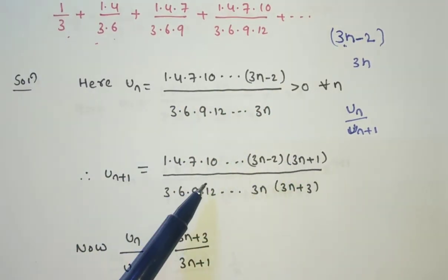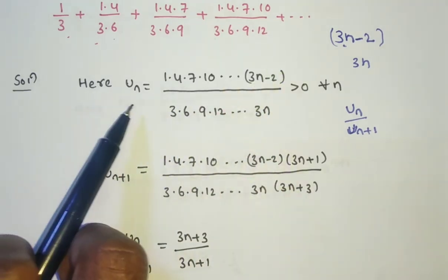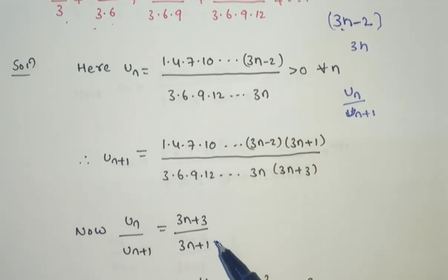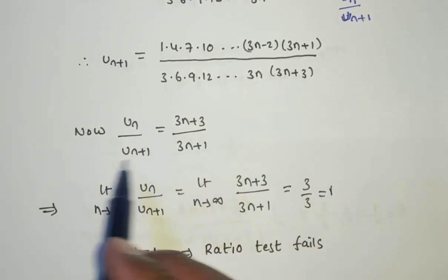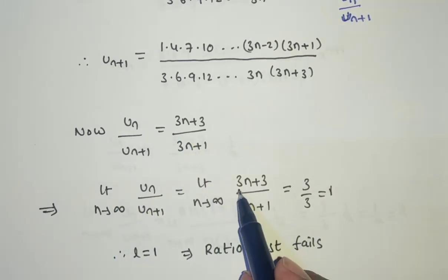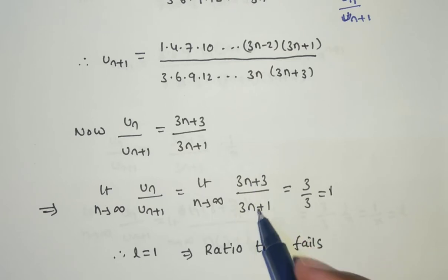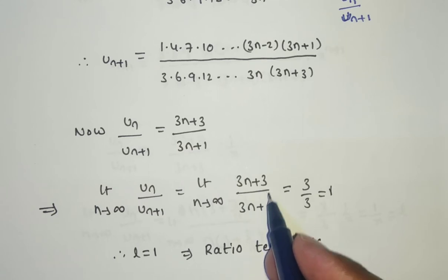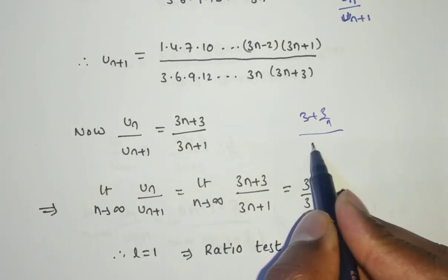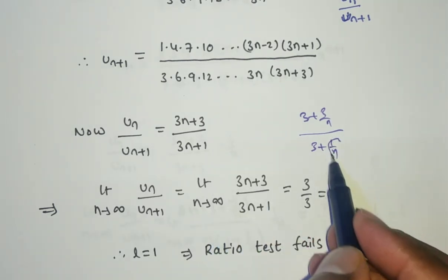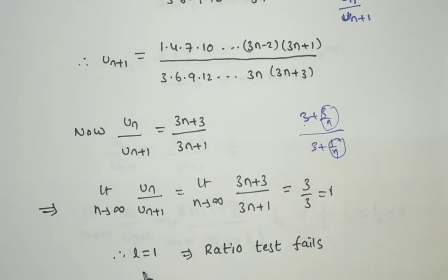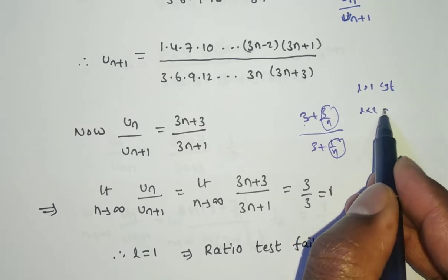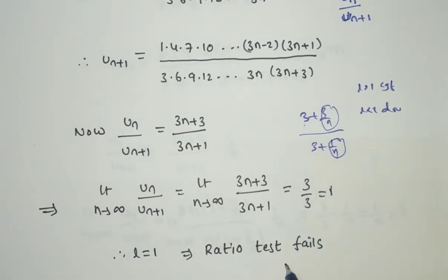Computing U_n / U_(n+1): the terms up to 3n−2 and 3n cancel out, leaving 1/(3n+1) divided by 1/(3n+3), which as a reciprocal gives (3n+3)/(3n+1). Taking the limit as n→∞, both numerator and denominator have the same degree, so the limit equals the ratio of coefficients: 3/3 = 1. Since L = 1 in the ratio test, the test fails.